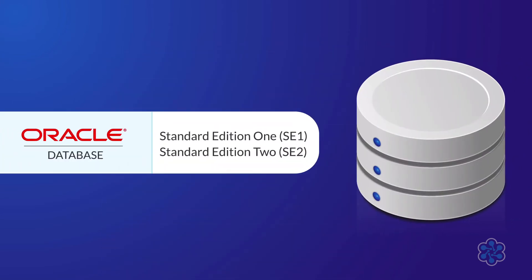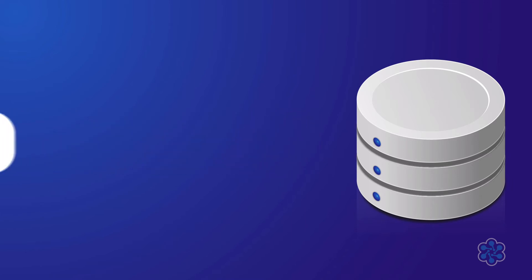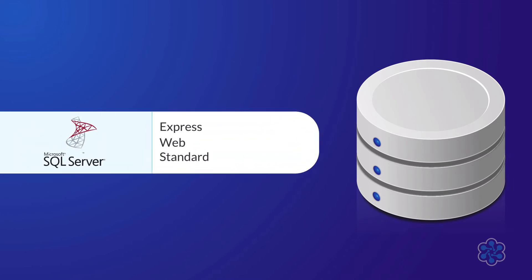For Oracle, when selecting it as your database engine, your on-demand instance price will be dependent on which edition of Oracle you choose. The options available are Standard Edition 1 and Standard Edition 2. For SQL Server, much like with Oracle, the SQL Server database engine is also dependent on the edition you select: either Express, Web, or Standard. Each of these options will offer a different on-demand price.